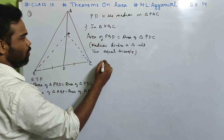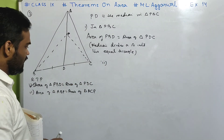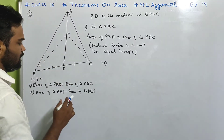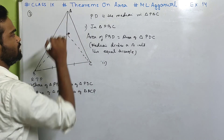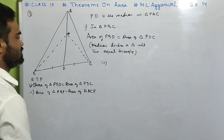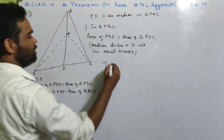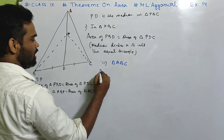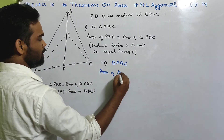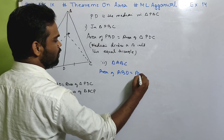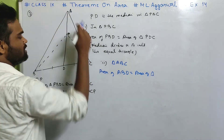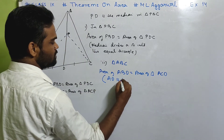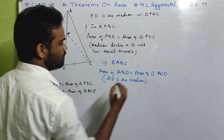Second part: area of triangle ABP equals area of triangle ACP. In triangle ABC, AD is the median, so area of triangle ABD equals area of triangle ACD. Triangle ABD can be divided into two parts: area of triangle ABP plus area of triangle PBD. Similarly triangle ACD is divided into area of triangle ACP plus area of triangle PDC.